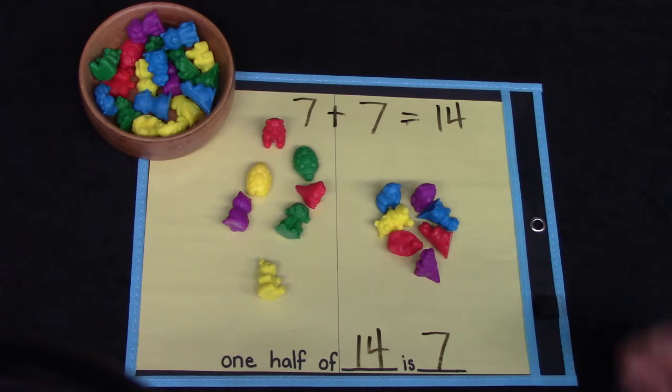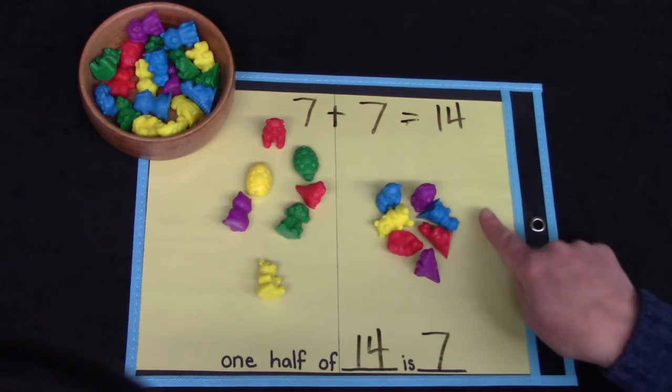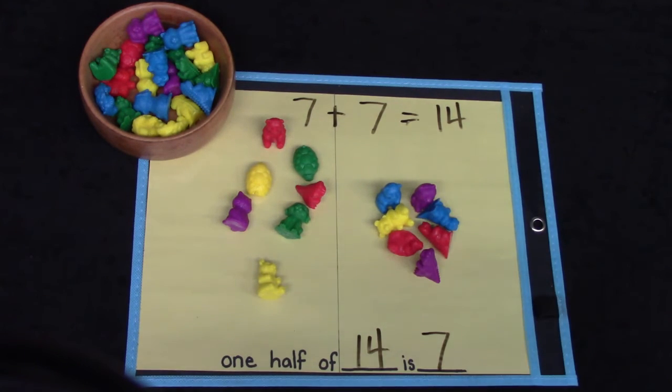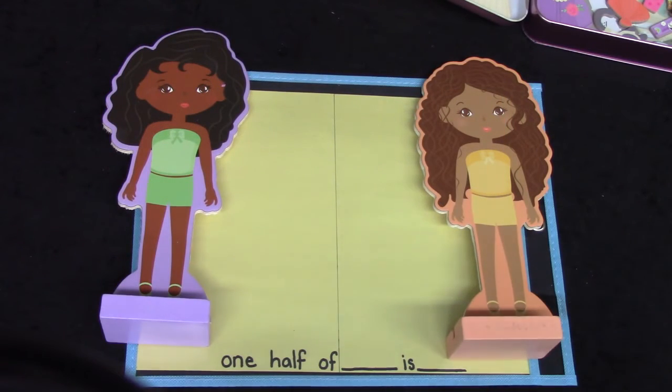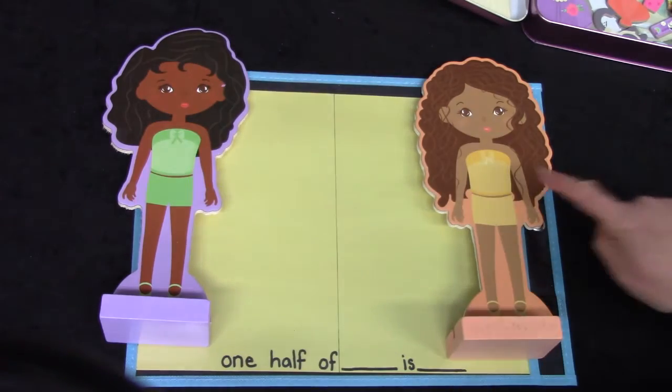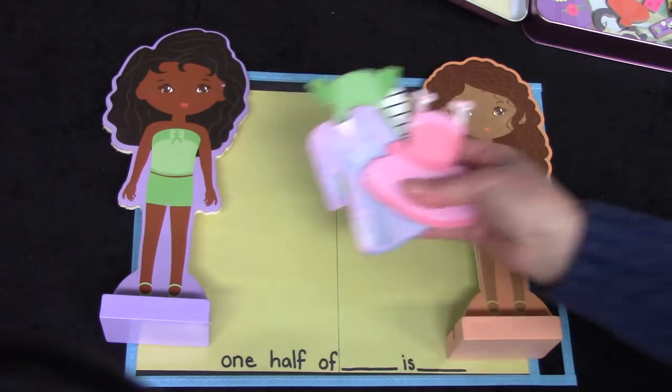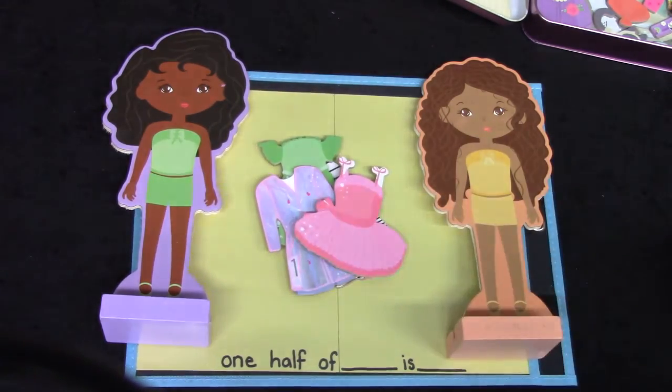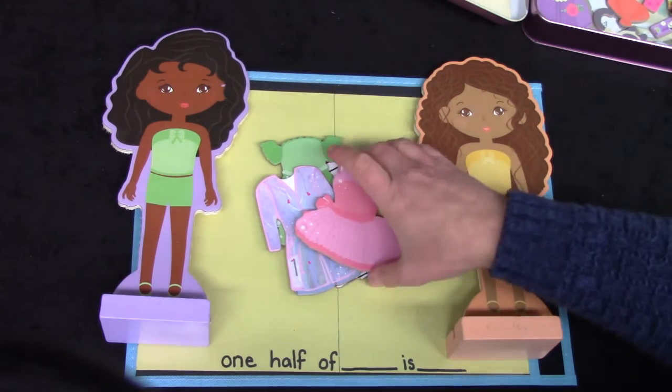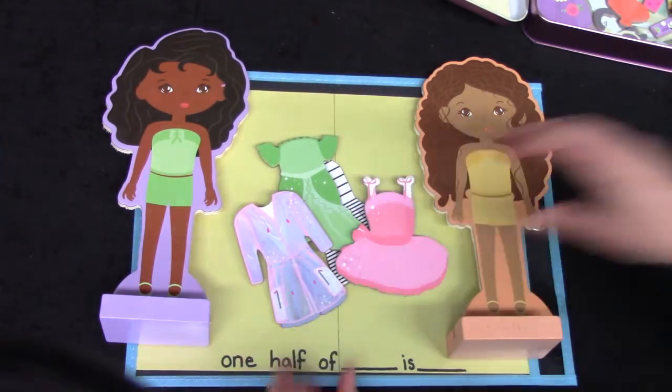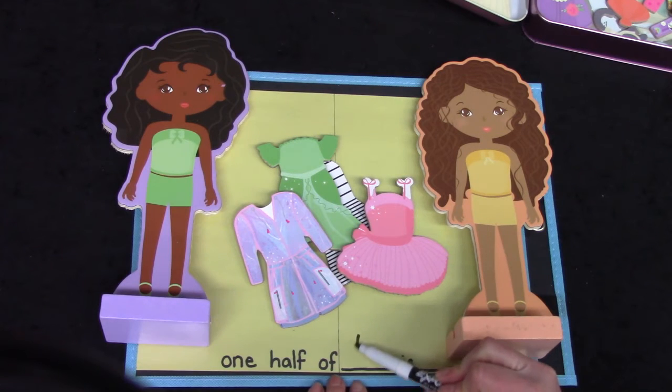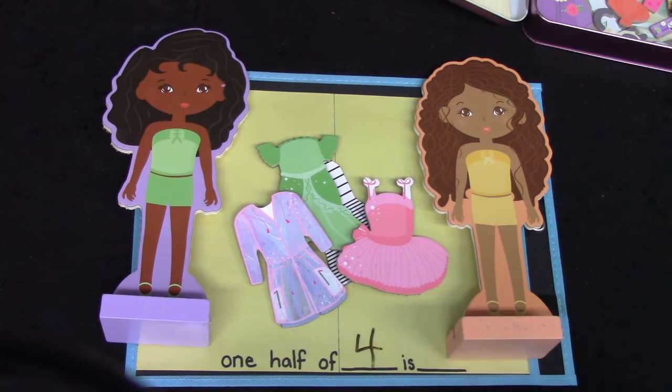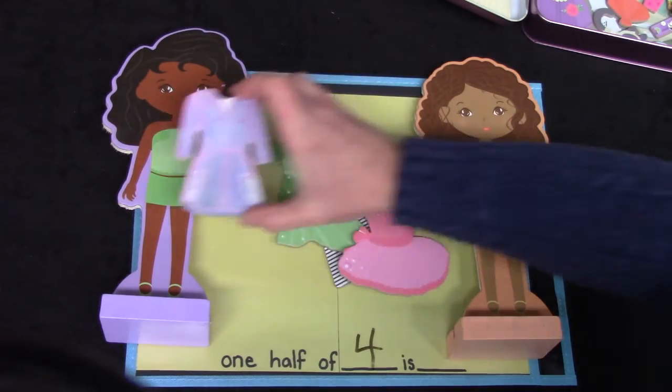When we're sharing we make sure that both sides receive the same amount so that it's fair. What if we had two friends playing with dolls and they had to share all of the doll clothes? I have four dresses. One half of four is how many? How many dresses will each friend have? Let's see.